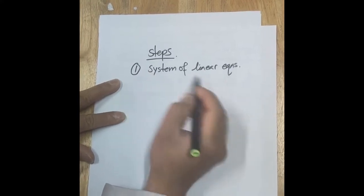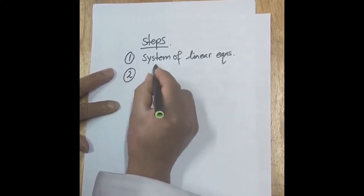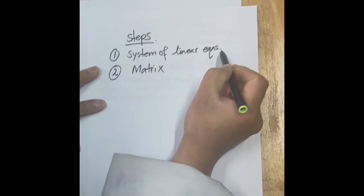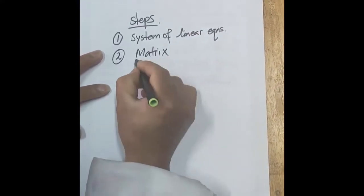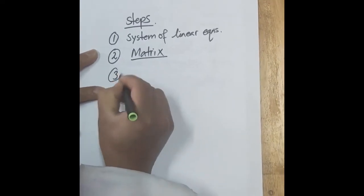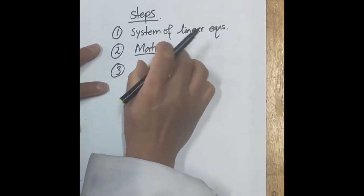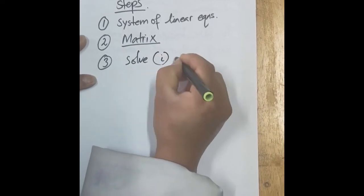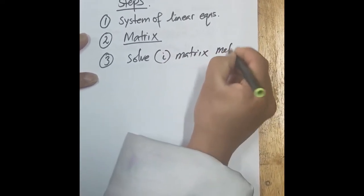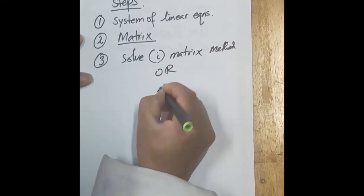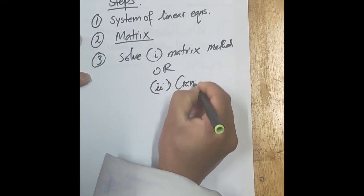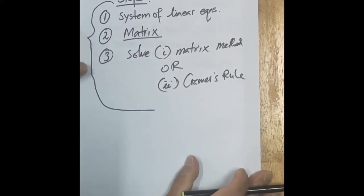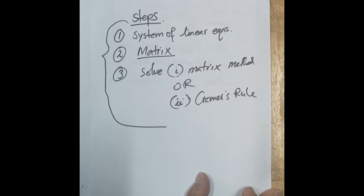Once you get the system of linear equations, the second step is to transform that system of linear equations into the form of a matrix. Whatever system of linear equations you obtain from the question, you transform or represent it in the form of a matrix. Once you do that, you can solve these equations using either the matrix method or Cramer's rule. Keep these three steps in mind whenever you solve the application of system of linear equations.